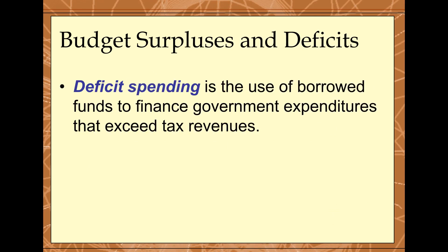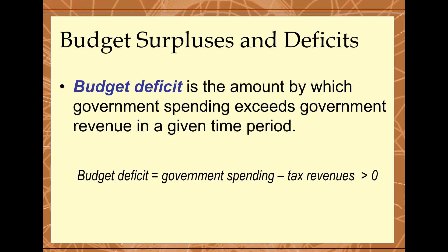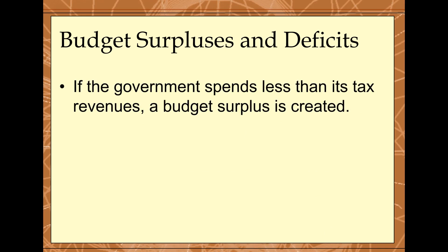When you spend more than you take in in terms of revenue, you run what we call a deficit. A budget deficit is simply the amount by which government spending exceeds government revenue. Taxes generate revenue and the government spends that. The budget deficit equals government spending minus tax revenues — if that number is positive, that's your deficit. For example, if the government is spending $150 billion but only takes in $50 billion in tax revenue, the government has a budget deficit of $100 billion for that year. If the government spends less than it taxes, a surplus is created — the mirror image of a deficit.